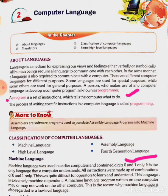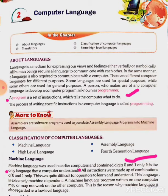The reason is that a computer system consists of electronic components such as transistors, capacitors, and current. These components only know either an on condition or an off condition — no third condition. That's why the computer understands only zero and one: zero means off and one means on. Machine language is also called binary language and low level language, and it consists of zeros and ones.